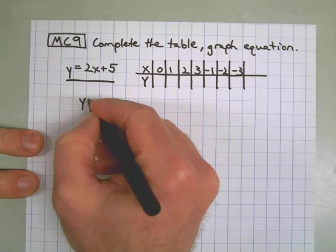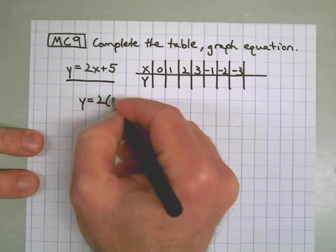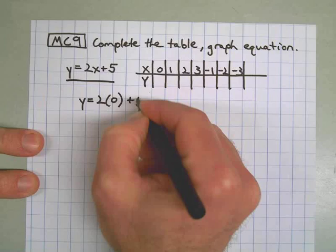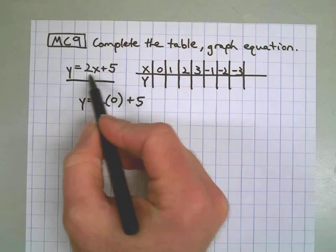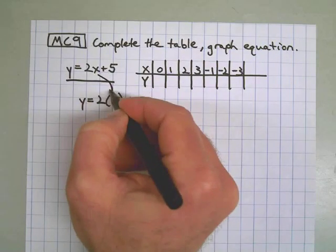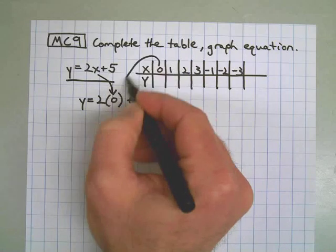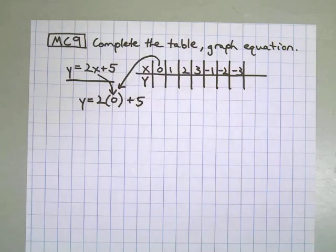Here's how it works. y equals 2 times 0 plus 5. As you can see, I took the original equation. Instead of the x, I put the 0. Draw some arrows there to show you what happened.